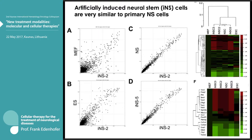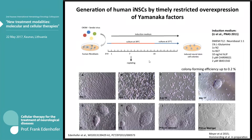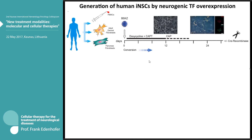The induced neural stem cells — that is how we named them — are very similar to neural stem cells produced from primary tissue, and we see no difference between the artificial induced neural stem cells and the primary ones; they are functionally totally equivalent. This data shows that one can produce them not only from mouse cells but also from human cells, as shown by very nice colonies, confirming that human neural stem cells can be directly converted from fibroblasts in the cell culture dish. We also adapted this reprogramming technology not only to adult dermal fibroblasts, but also to peripheral blood cells and pancreatic fibroblasts.